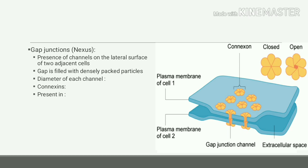You can see here in the diagram, each half of the channel is surrounded by six subunits of proteins which are known as connexins. This type of junction is present in the heart and the basal part of epithelial cells of the intestinal mucous membrane.